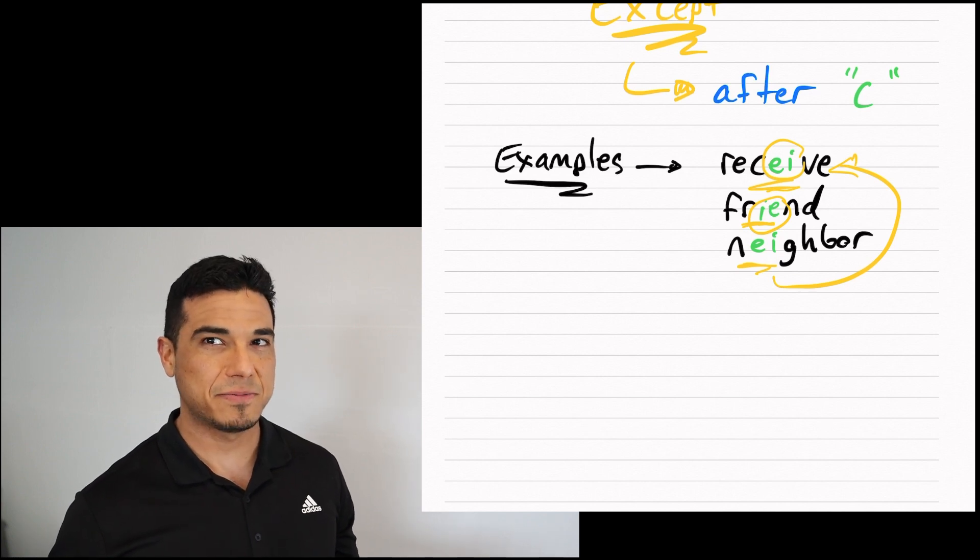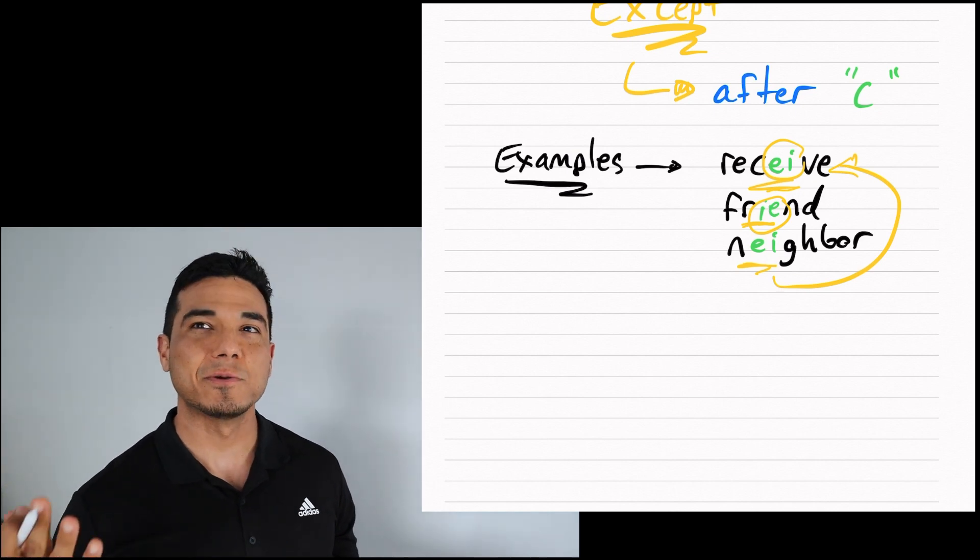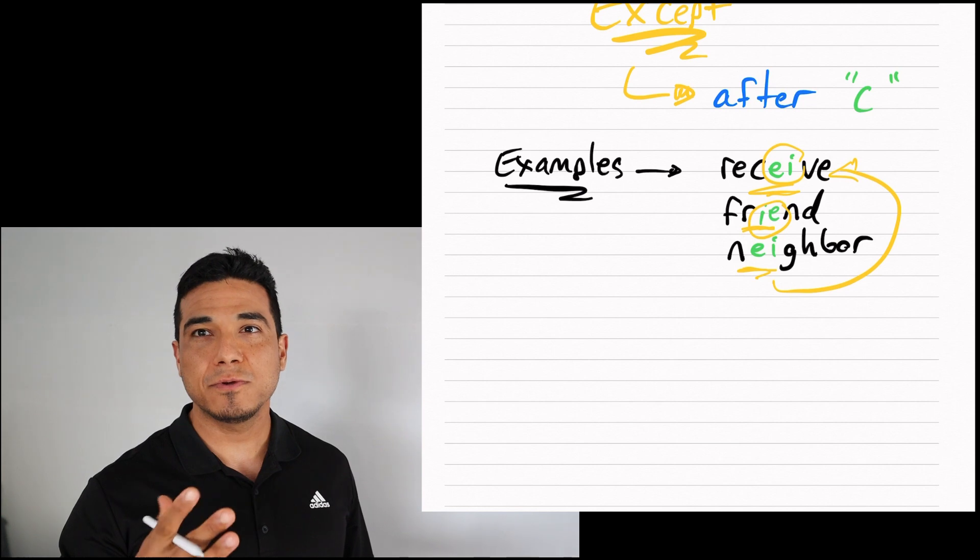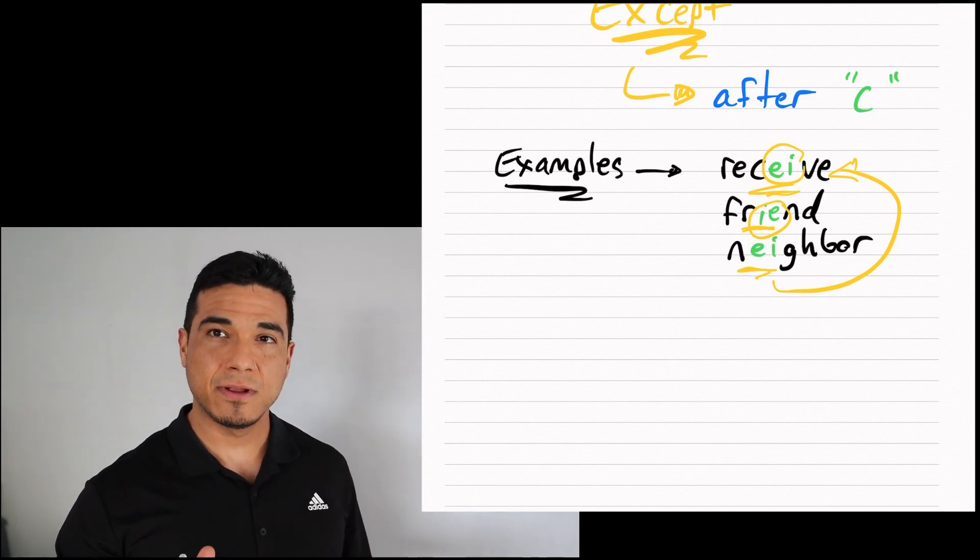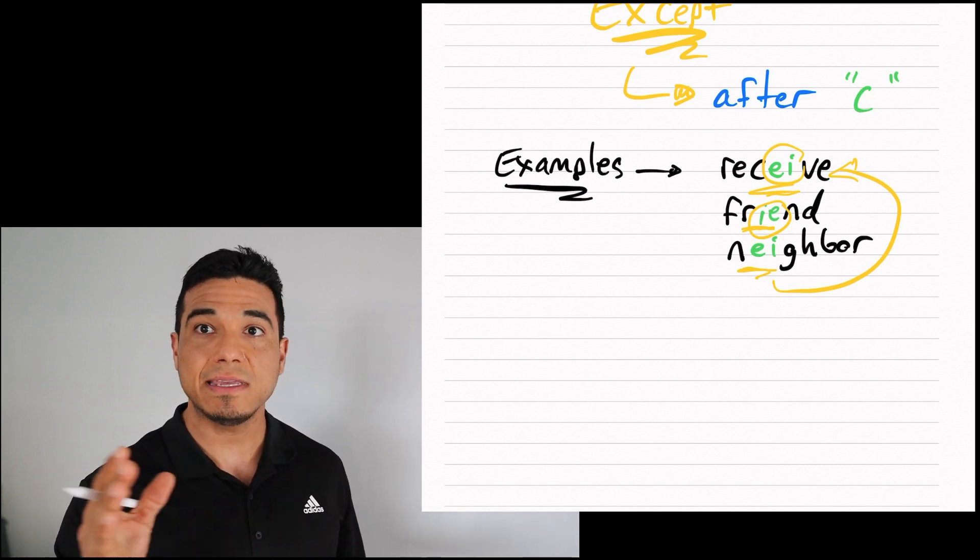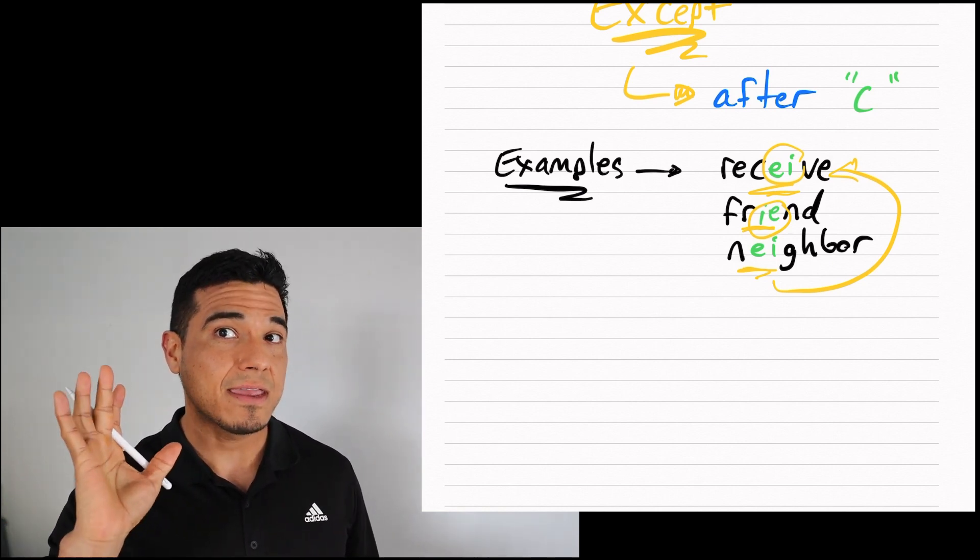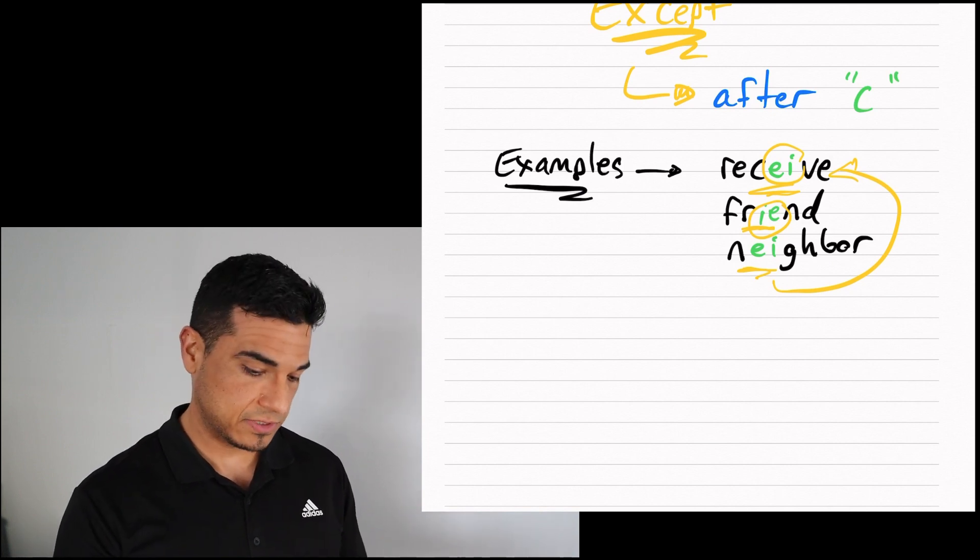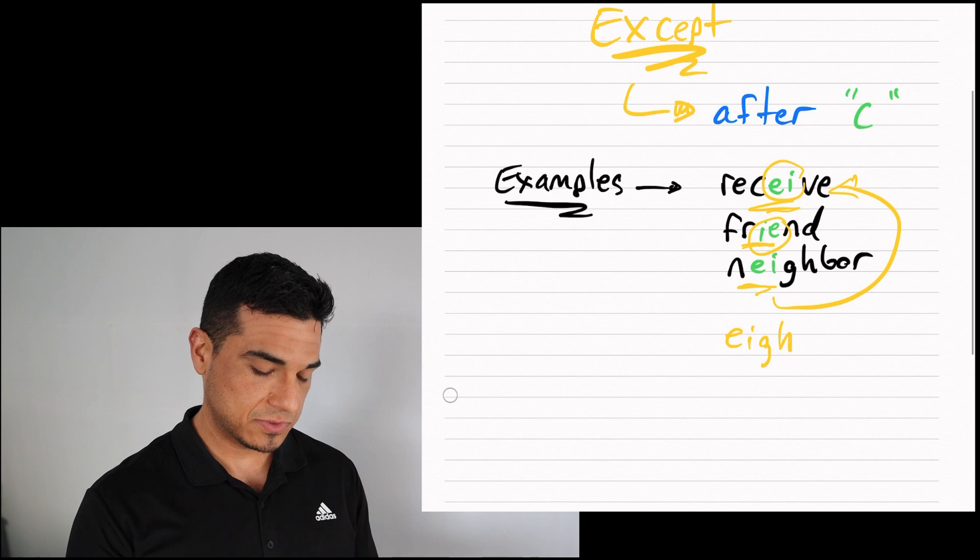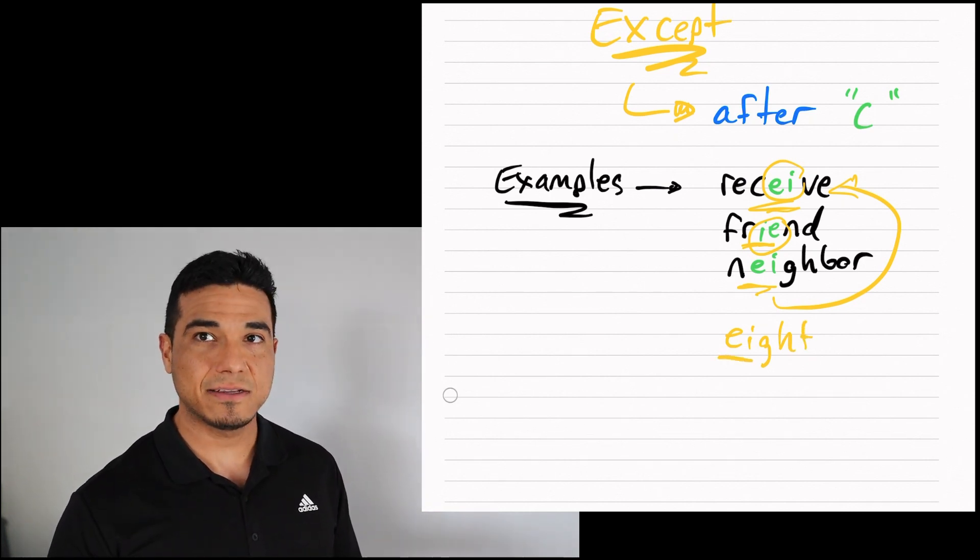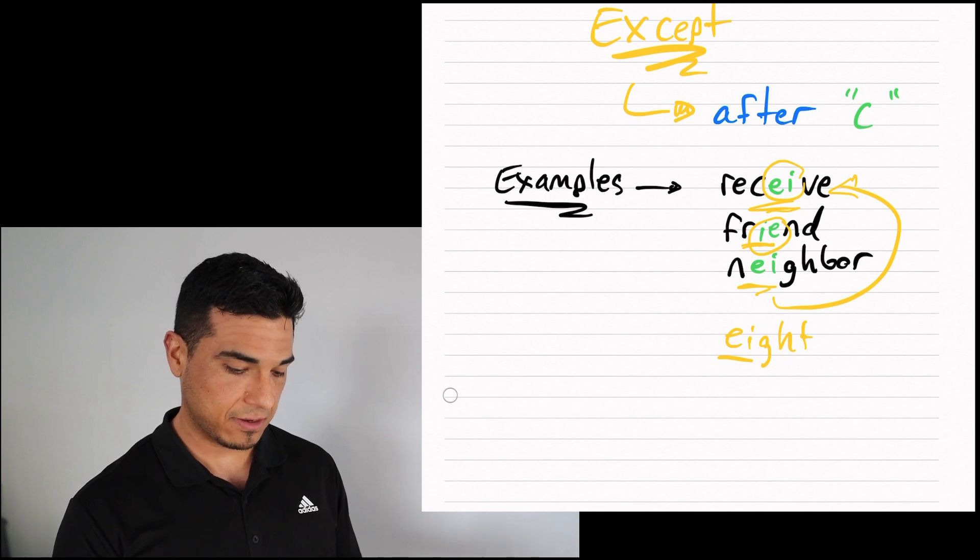We'll talk a little bit about why. This is yet another exception to our rule. You wouldn't use IE in neighbor. That's because for this word, it depends on the sound which is created by E and I. It sounds like A, kind of like you would hear in the number eight.